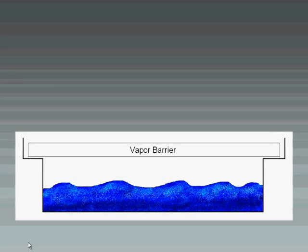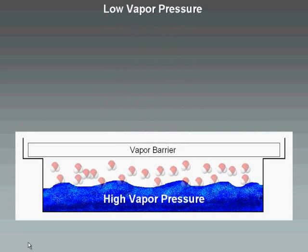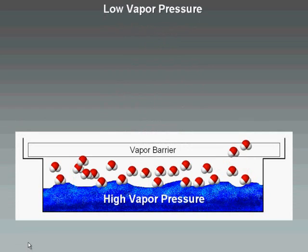The vapor pressure difference between the inside of the test dish and the conditioned space causes water molecules to pass through the permeable material, resulting in either a mass gain or loss depending on the method used.